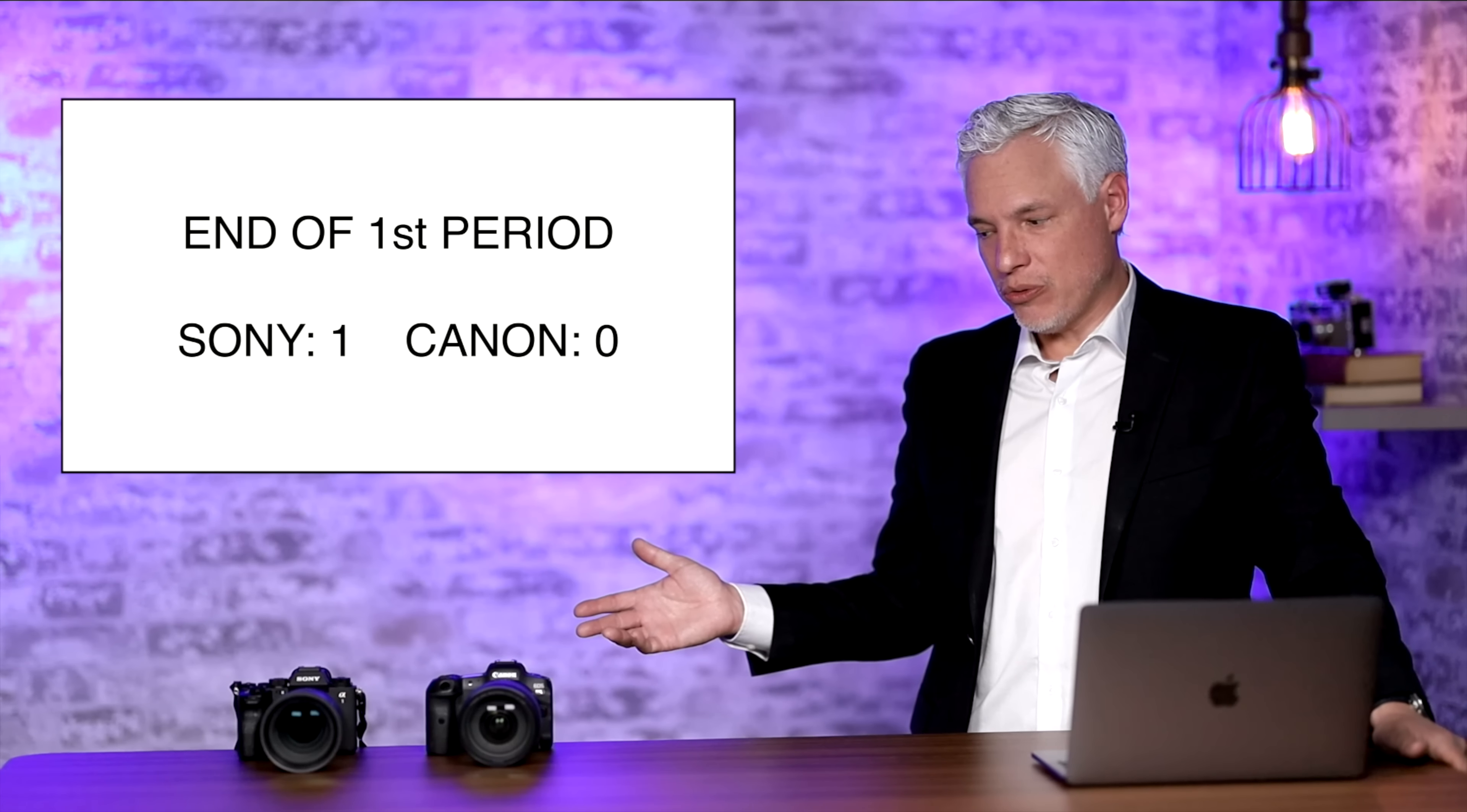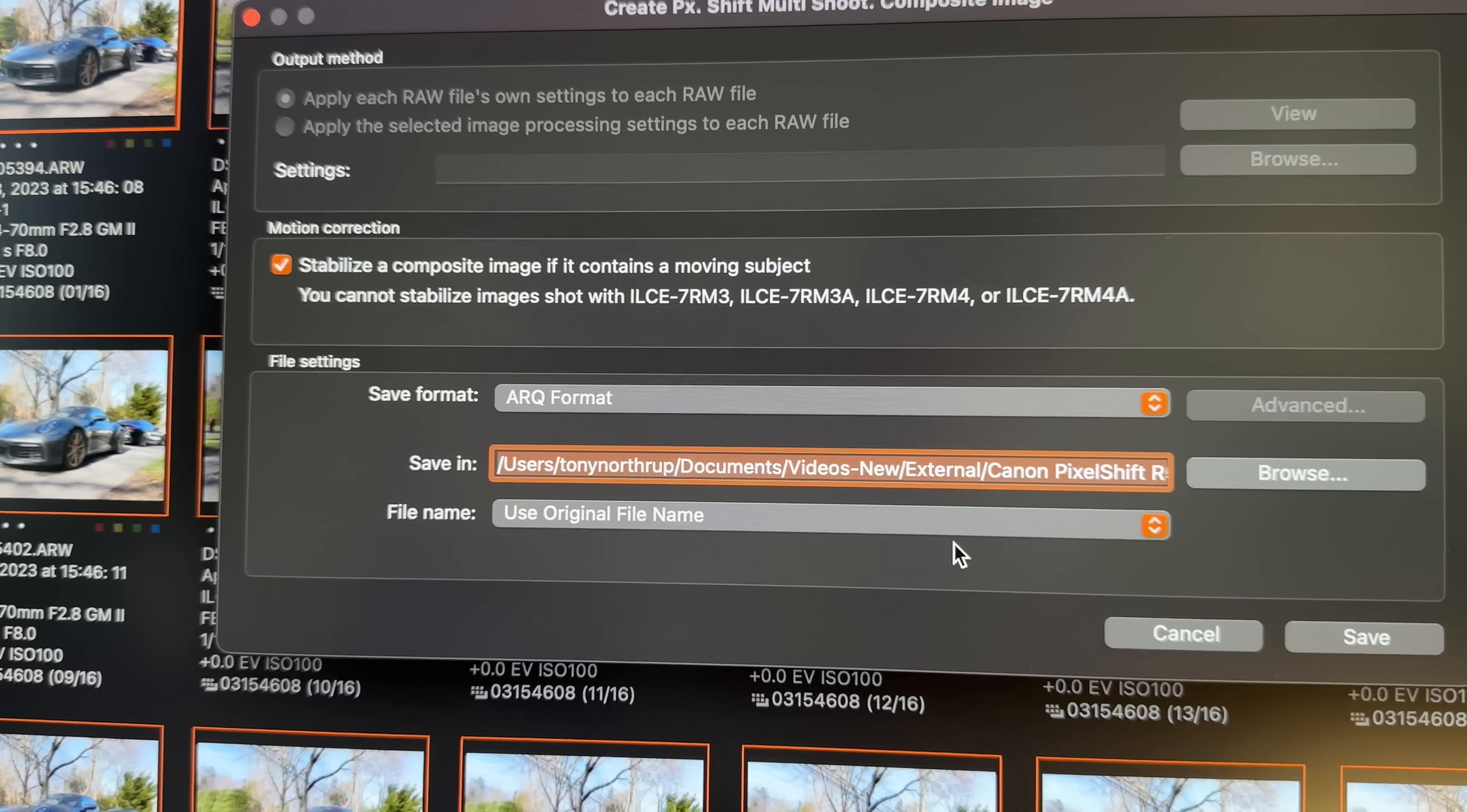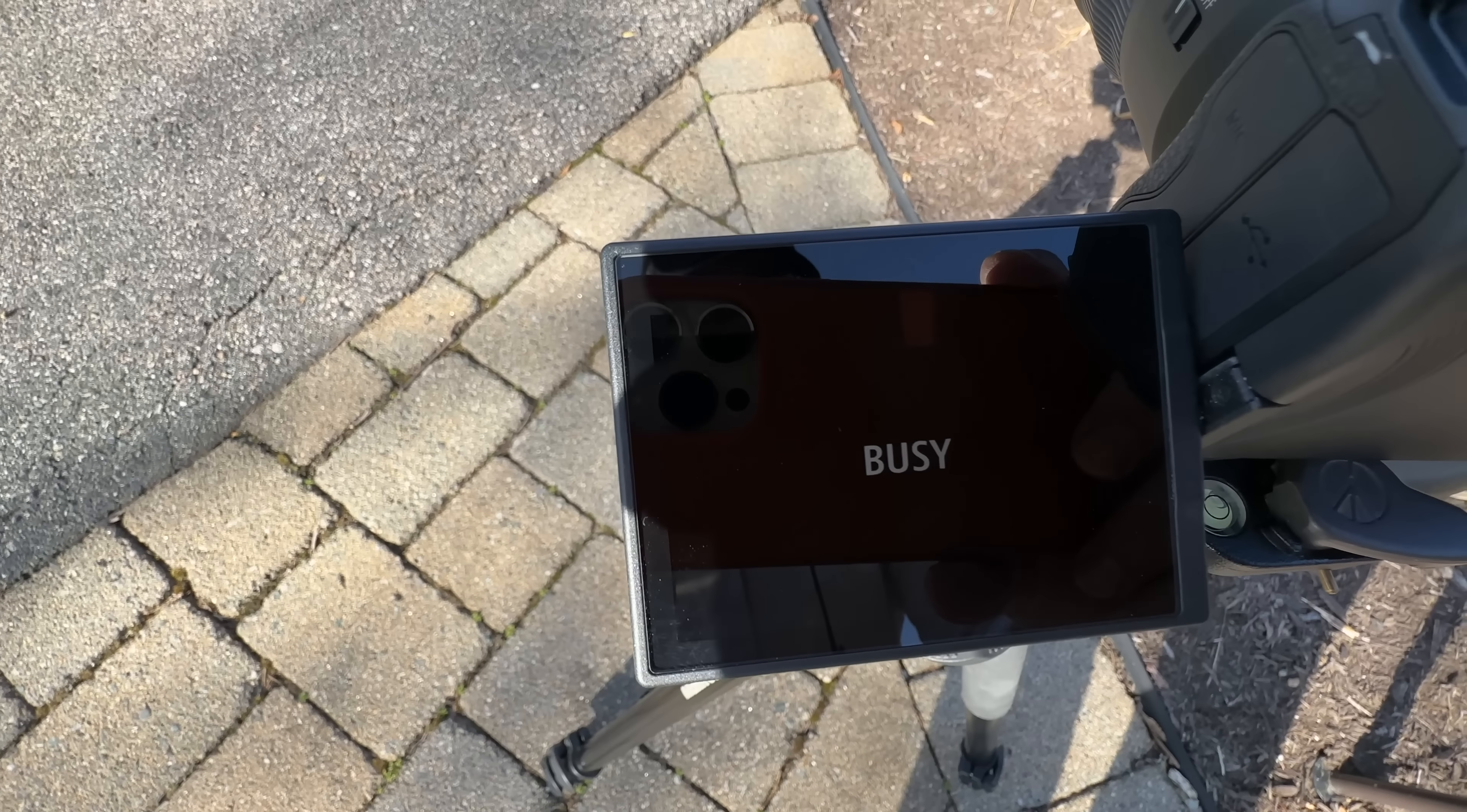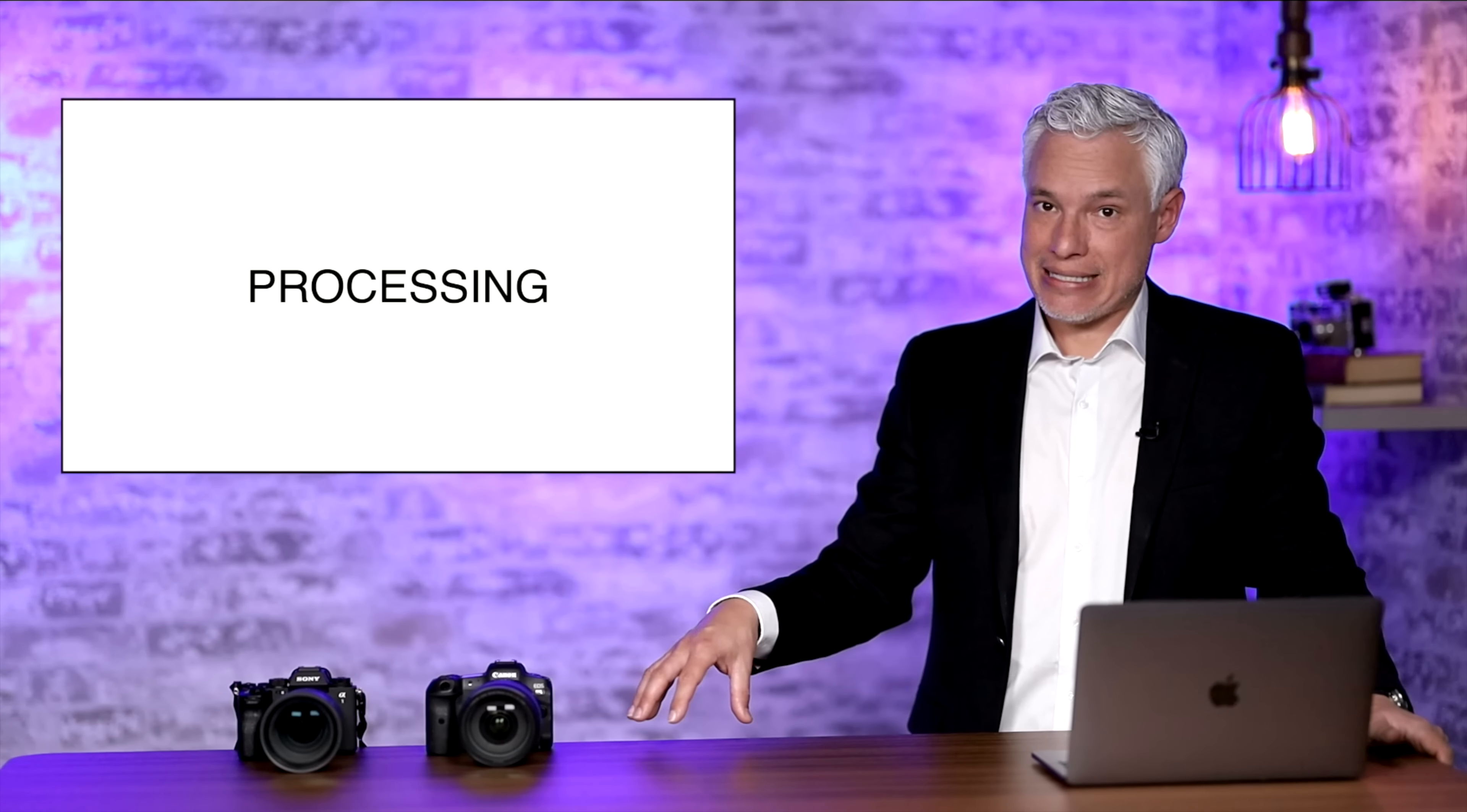As long as we're keeping score let's talk about processing. Sony captures 16 raw images and writes them all to the card. You have to take the card out, put it into a computer, run Sony's proprietary software, you can't do this in Lightroom, import them and then export ARQ files that you can finally pull into Lightroom and use your normal workflow. The Canon combines them in camera making JPEG files that you could send to your phone or bring into Lightroom or whatever. In the real world the pixel shift images add a lot of time to your workflow. It is inconvenient. The Canon workflow is much simpler.